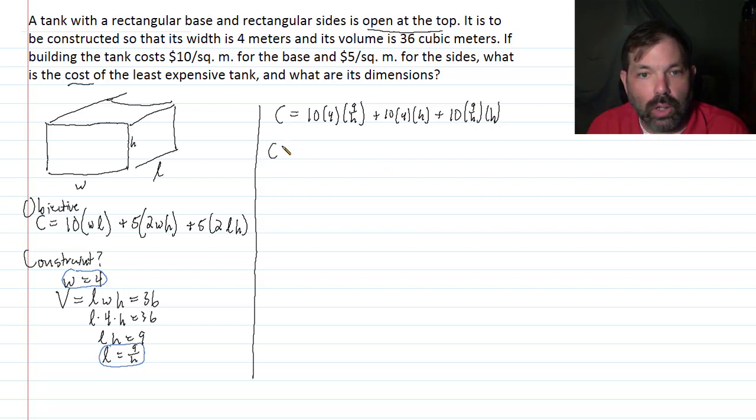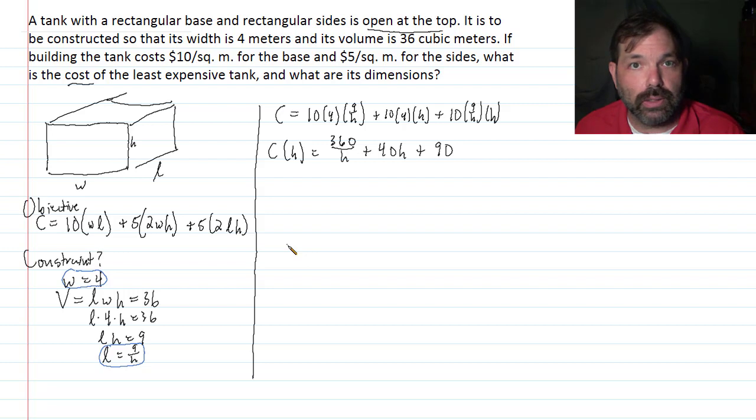So now my cost model, my cost is a function of H and is 360 over H plus 40H plus 90. There's the cost model, and now it's just a function of H and we can use calculus to analyze it.